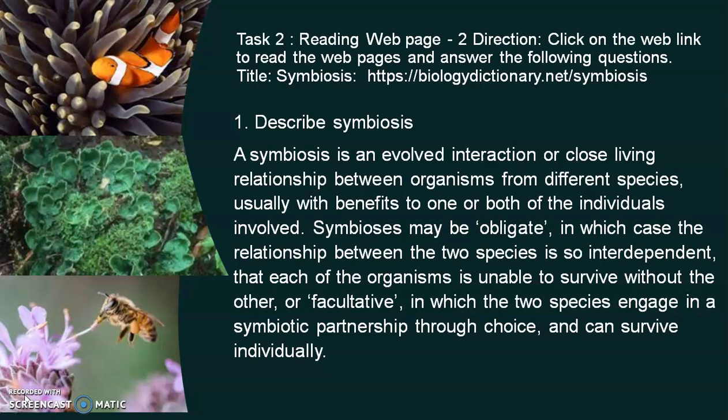It may be obligate when the two species are so interdependent they are unable to survive without the other. The second type is facultative, in which the two species engage in a symbiotic partnership through choice and can survive individually. Examples include parrotfish and coral reef, and the well-known example of algae and fungi forming lichens, found on rocks.